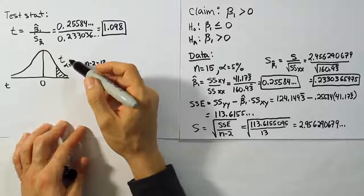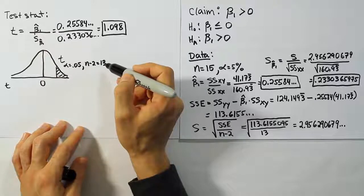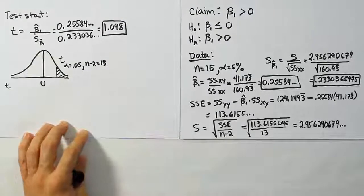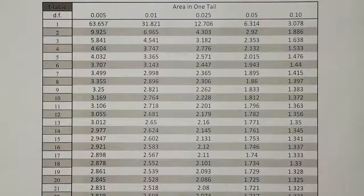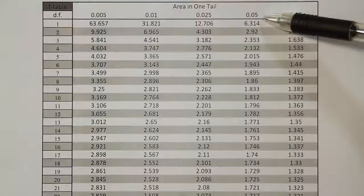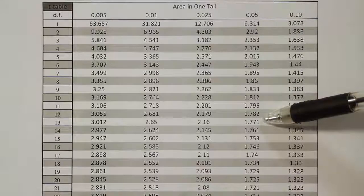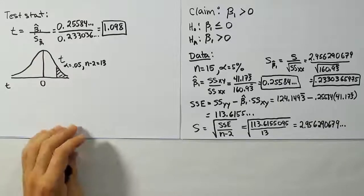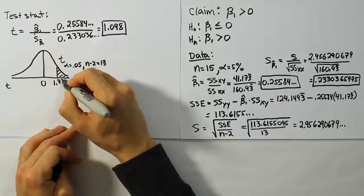Alright, so let's go to the table. We're going to look up in the 0.05 column, 13 degrees of freedom. And when we're done, we should get our critical value down here. Okay, so let's go check that out right now. Okay, so we're looking for 0.05 in one tail, and we're going to go down to degrees of freedom, 13. So that's 1.771. Okay, so we found our critical value to be 1.771.